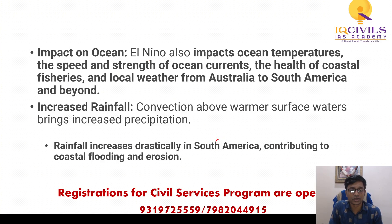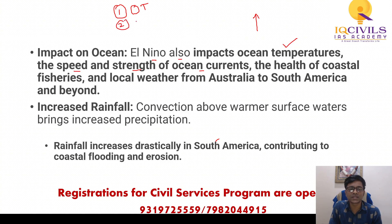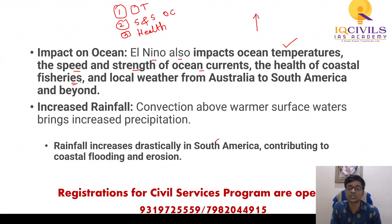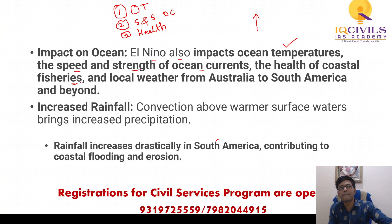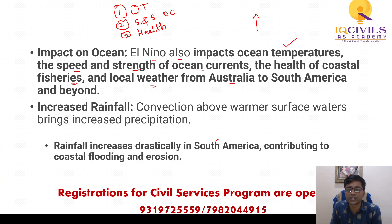El Niño also impacts ocean temperatures directly. The first impact is that the average temperature of the ocean increases. Second, it impacts the speed and strength of ocean currents. Third, it impacts the health of coastal fisheries, because any change in ocean temperature, current direction, or current speed affects marine life. El Niño also impacts local weather from Australia to South America, since the playground of El Niño and La Niña is the ocean between Ecuador/Peru and the Philippines/Indonesia.